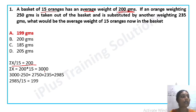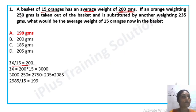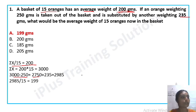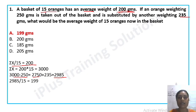Now we calculate the new total weight. We remove the 215 gram orange, giving us 3000 minus 215 equals 2785. Then we add the substituted orange weighing 235 grams: 2750 plus 235 equals 2985. So sigma x is 2985. Then sigma x divided by n equals 2985 divided by 15, which equals 199.